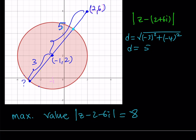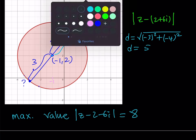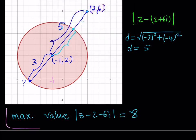What if they also ask about the minimum distance? Well, in that case, you take the distance between the two points — which is 5 — and subtract the radius 3 from it, giving you 2, which is the minimum value. But we're not looking for that here, and the answer to this problem is 8.